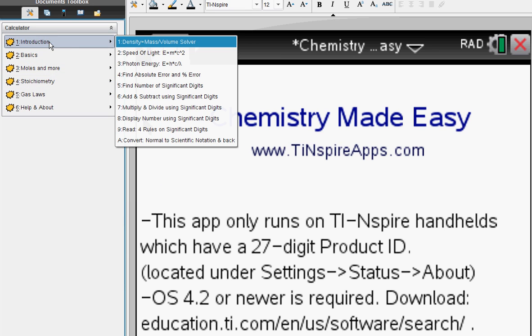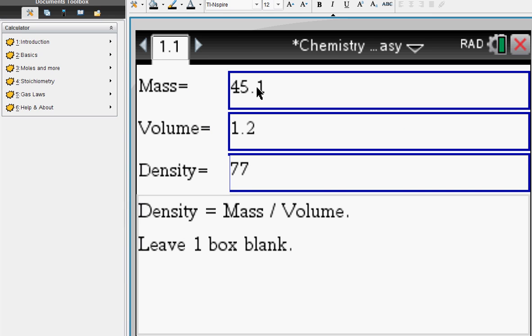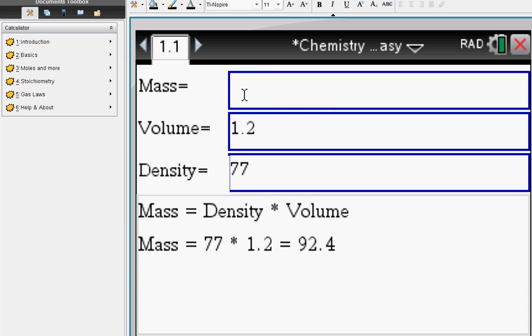Let's do some of the computations. Density: mass equals density divided by volume. It says you have to leave one box blank. Let's say we leave the mass box blank. We compute the mass to be density times volume.